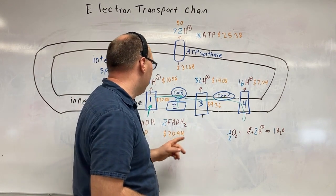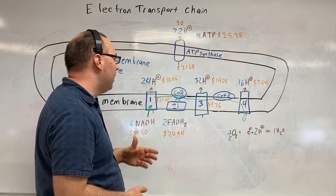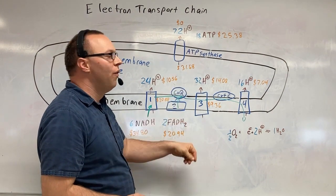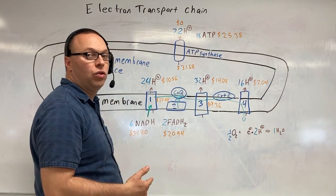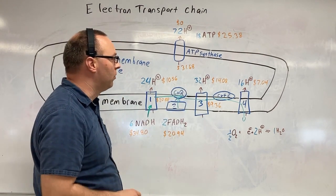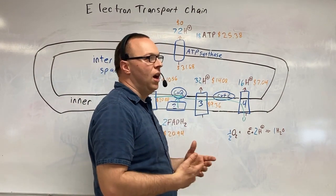And so what's going to happen is for each molecule of FADH, each molecule of NADH, we're pumping out four protons right here. So we're pumping out a total of 32 protons, or those H+, those acid particles. That's going to be like $14.08 worth of hydrogen.